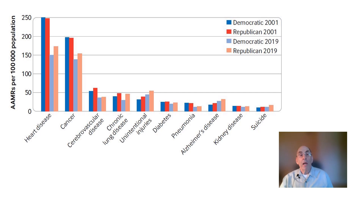The decline in mortality from heart disease between 2001 and 2019 was truly impressive — about 40% in the blue counties and about 32% in the red counties. Though not as large, the decline in mortality from cancer also was significant. Together, these declines in mortality from both heart disease and cancer account for much of the decline in overall mortality rates during the study period.